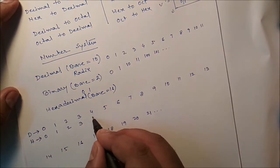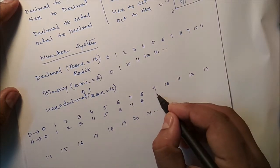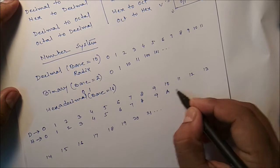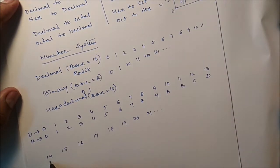2, 3, 4, 5, 6, 7, 8, 9. After 9, A, B, C, D, E, F. So 0 to F, 16 symbols are there.